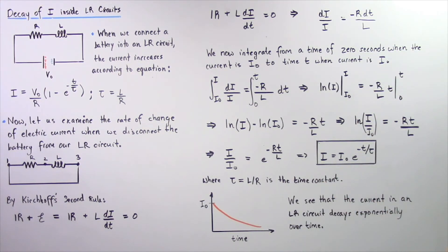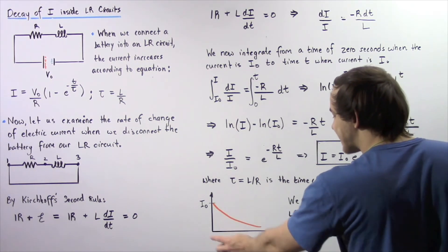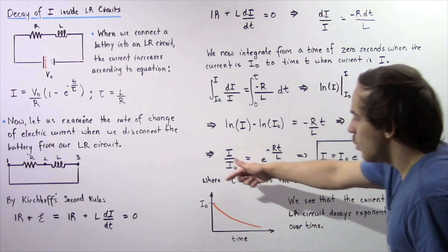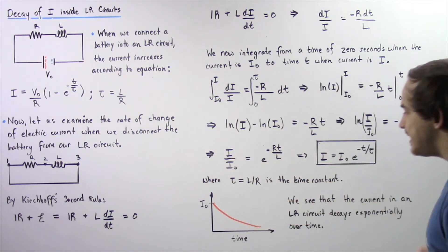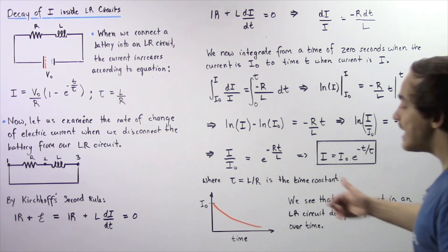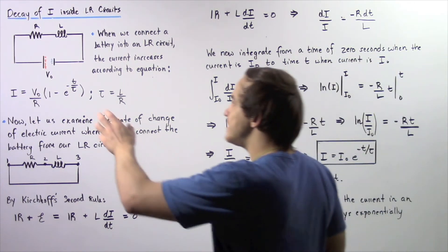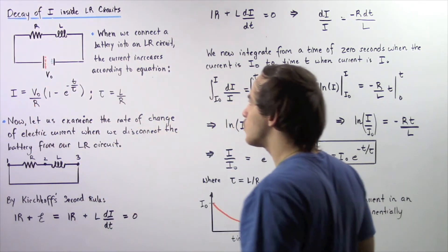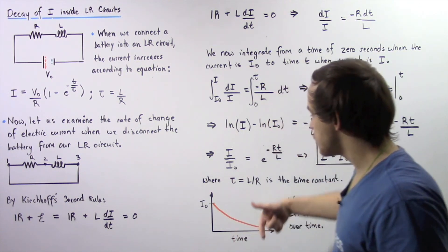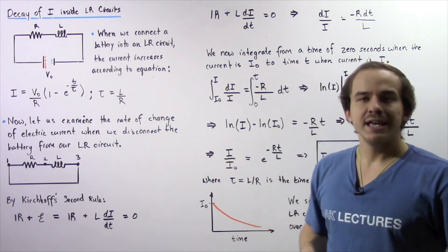Plotting this equation with time on the x-axis and electric current on the y-axis gives an exponential decay curve. The electric current inside an LR circuit decays exponentially over time — when the battery is removed, the current decreases according to this exponential equation.